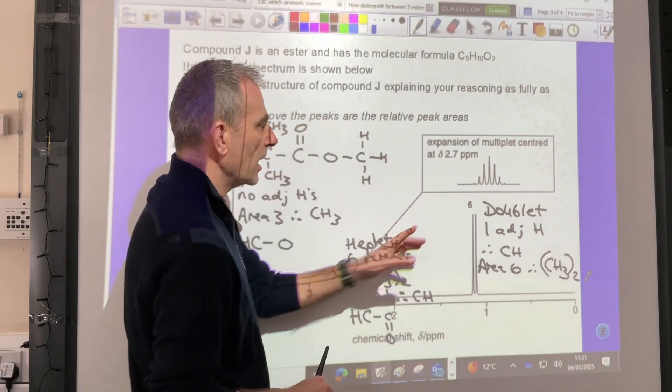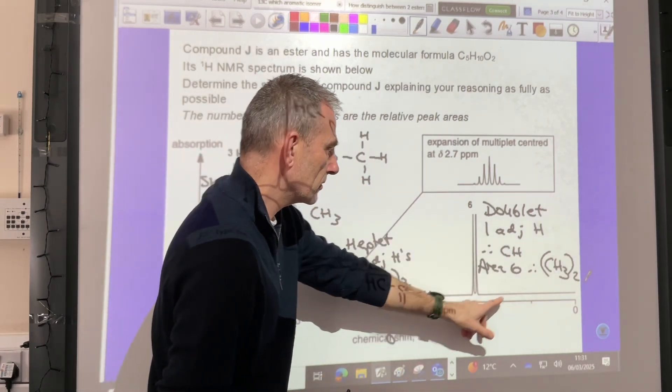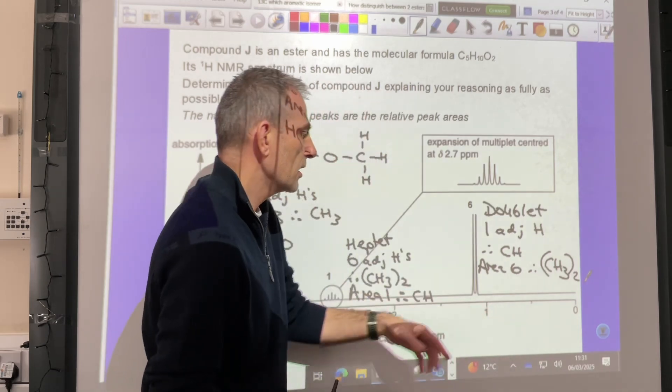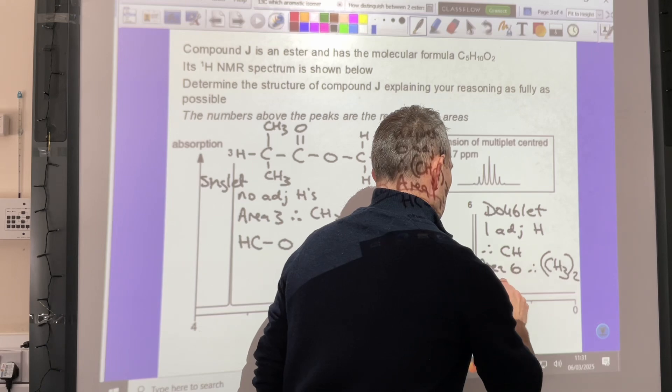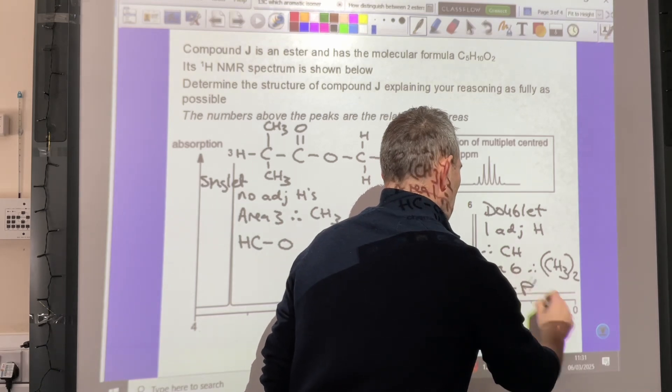And their shift value is down near the 0, so it's just over 1 there. So that's called the H to C to R environment. So H, C, R.